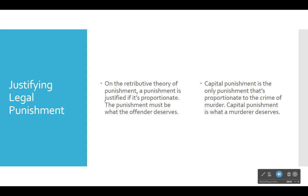Capital punishment is the only punishment that's proportionate to the crime of murder; capital punishment is what a murderer deserves. It's the only punishment that can be proportionate to murder — life in prison is given for all kinds of other crimes, but Primoratz's point is that murder is not like any other crime. Murder is uniquely terrible, and the destruction of an innocent life — because it's a uniquely horrific crime — has to receive a punishment that is also uniquely harsh, to express our outrage, horror, and indignation at the destruction of an innocent human life. That's how we affirm the dignity of human life.